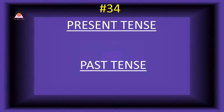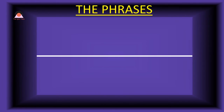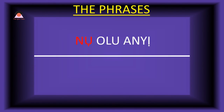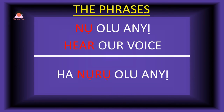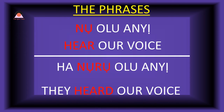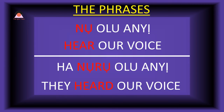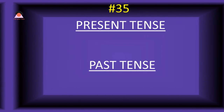Word number thirty-four: 'noo,' meaning 'hear.' The past tense of noo is 'noru,' meaning 'heard.' Present tense phrase: 'noo olu-ra-ni' — hear our voice. Past tense: 'ha-noru olu-ra-ni' — they heard our voice.